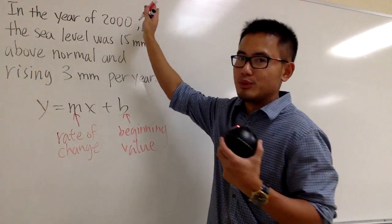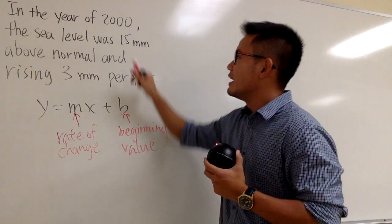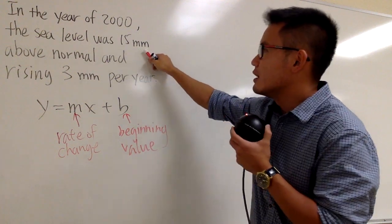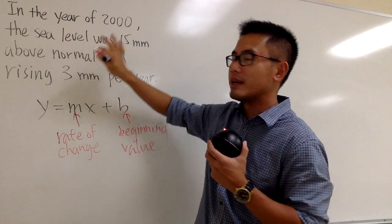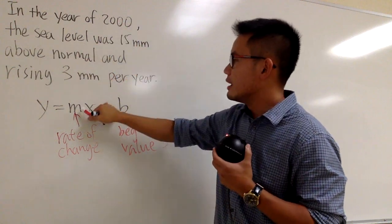And the 2000 doesn't really matter because that's just the year. It says in the year of 2000. The 15 millimeters, it was at the beginning in the year of 2000. So b is 15, and the m is 3.